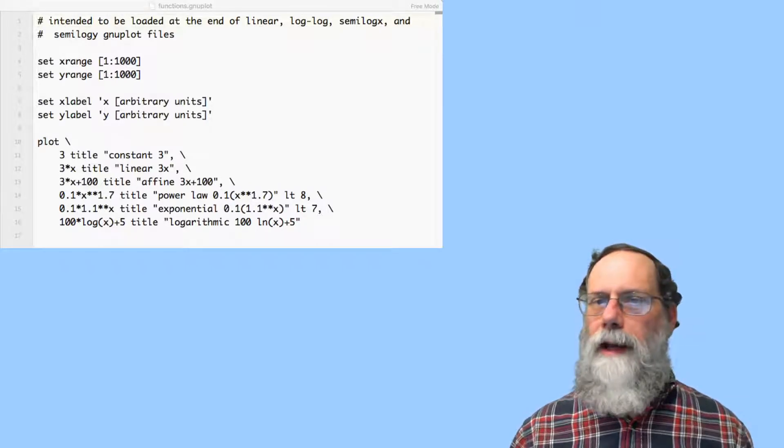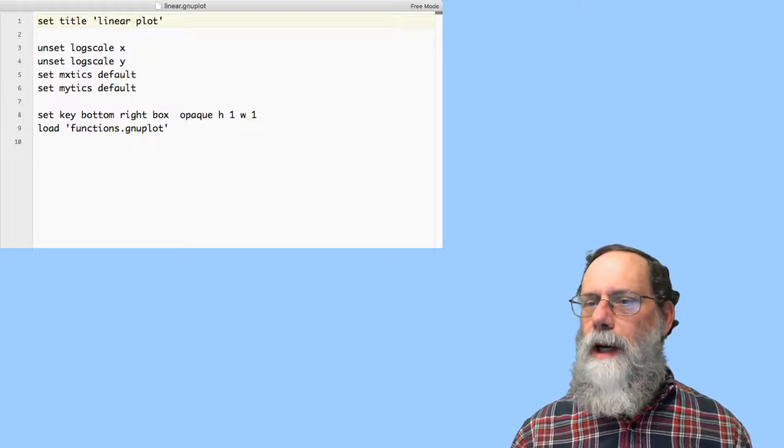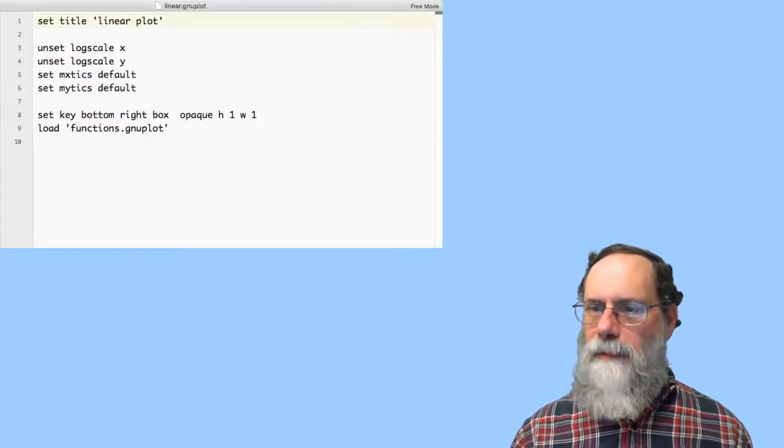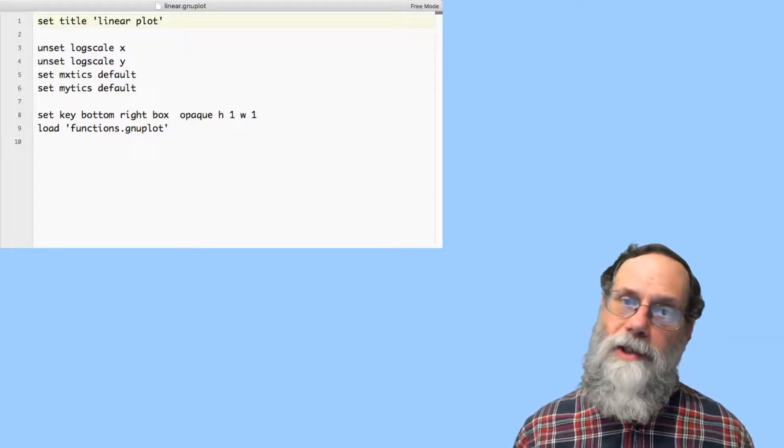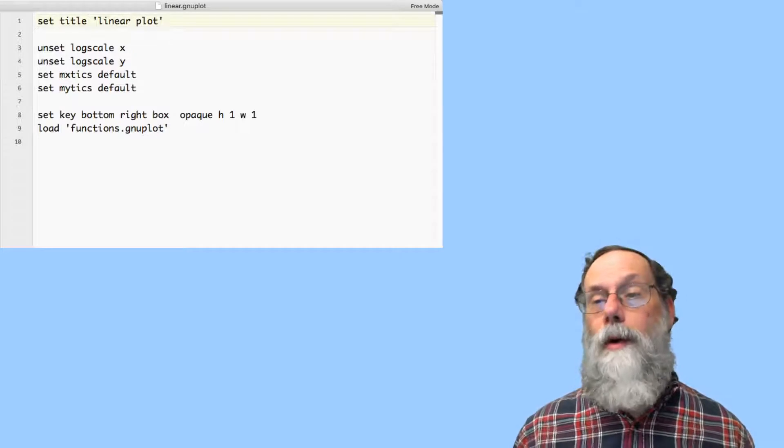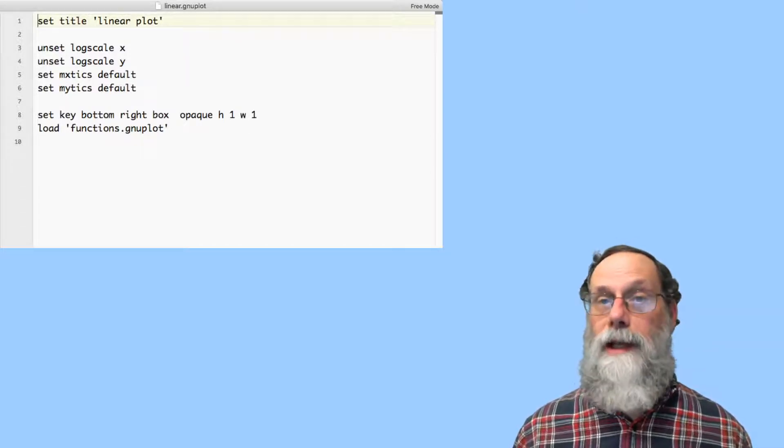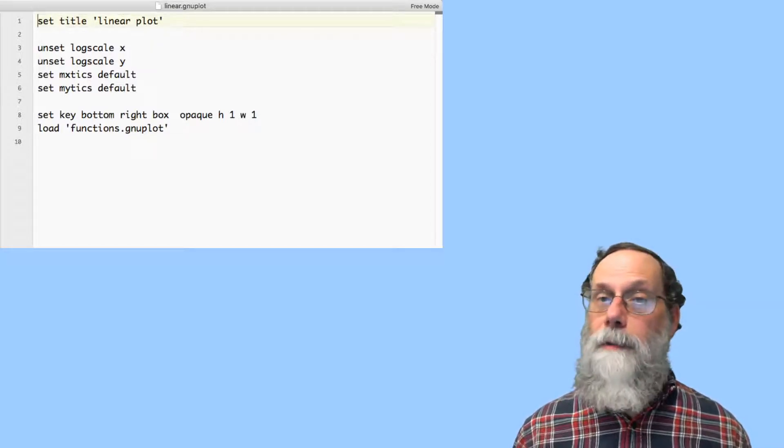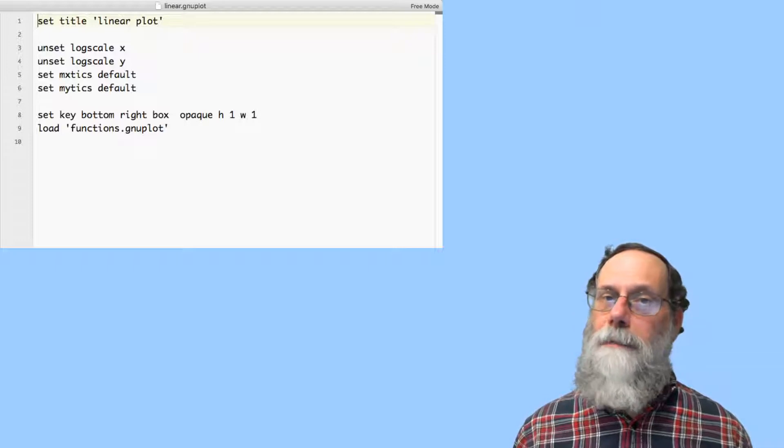I'm going to put them inside a script. Start by setting a title for the script, and then decide whether the x and y-axes are going to be log scale or not log scale. So I'll either set log scale x or unset log scale x. Same thing for y. So this is a linear plot. I'm going to unset both x and y. And the next thing is to set the minor x ticks. Here I'm going to set them to default. If I was doing log scale, I would set them to 10.